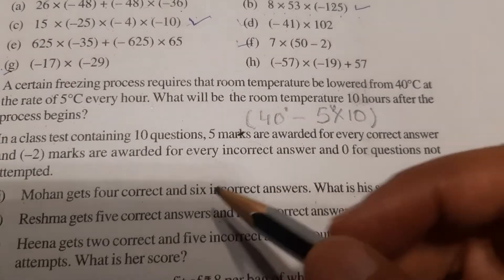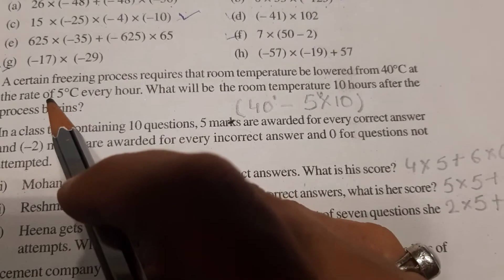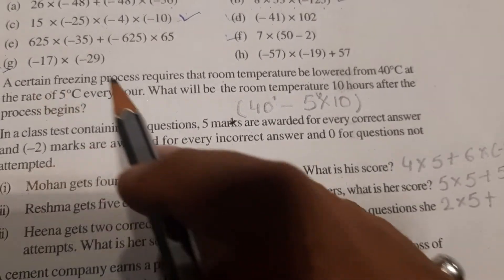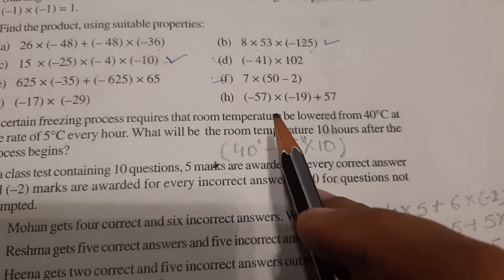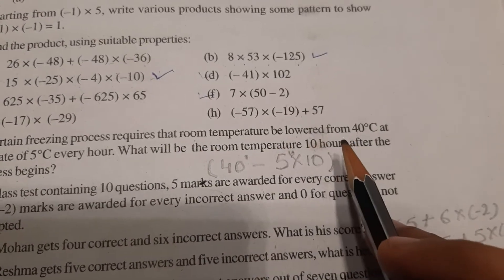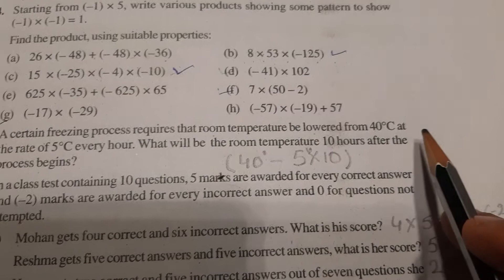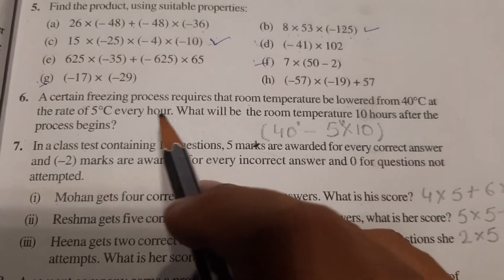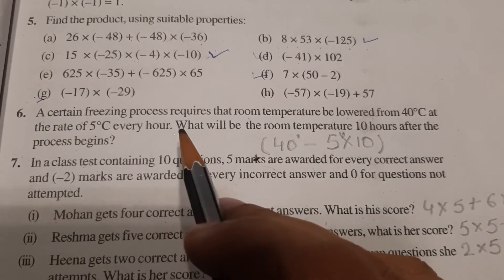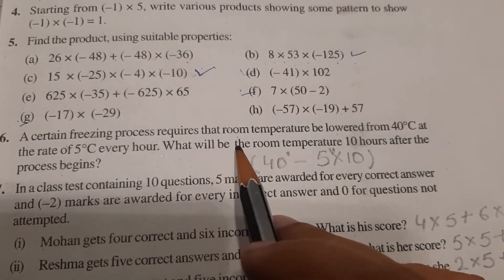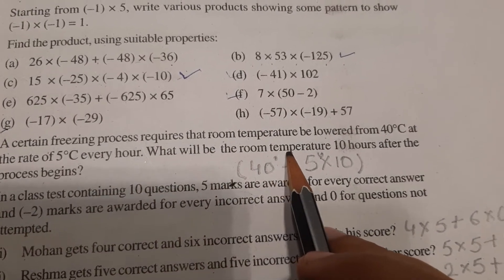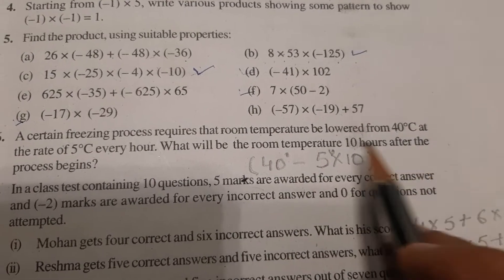Okay, so let's start. A certain freezing process requires the room temperature be lowered from 40 degree Celsius at the rate of 5 degree Celsius every hour. What will be the room temperature 10 hours after the process begins?